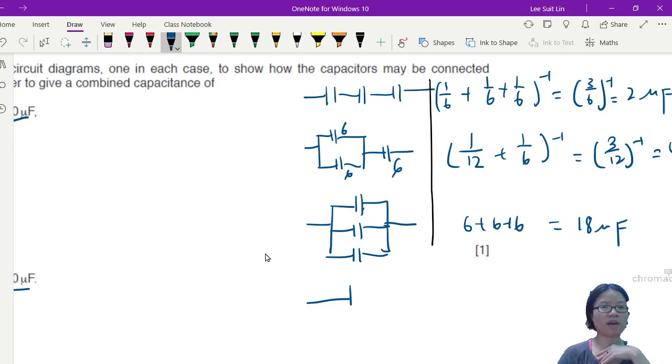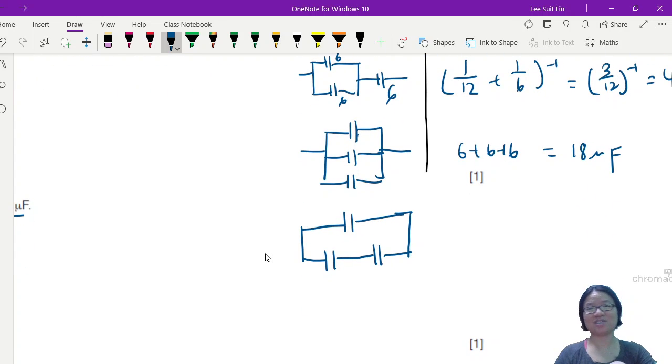So here is the other option: you could have one single one alone, forever alone, that is connected in parallel to two others that are in series like this. Okay, so if this is your drawing, then what would your total capacitance be?